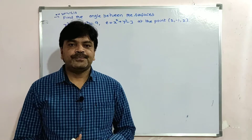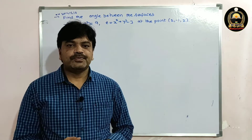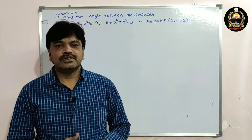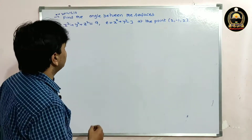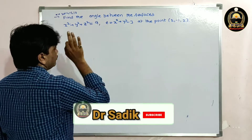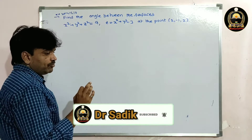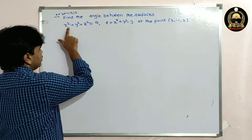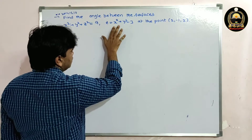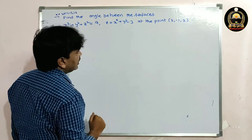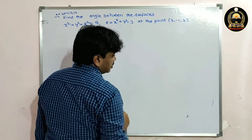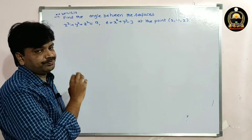Good morning friends. In this lecture I am going to solve a problem on the angle between two surfaces. The problem is: find the angle between the surfaces x² + y² + z² = 9 and z = x² + y² - 3 at the point (2, -1, 2).